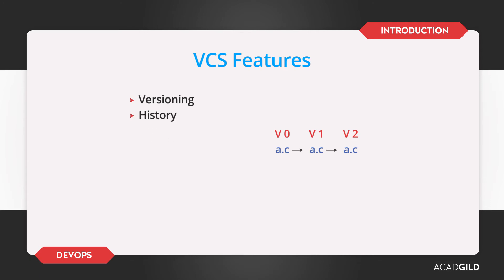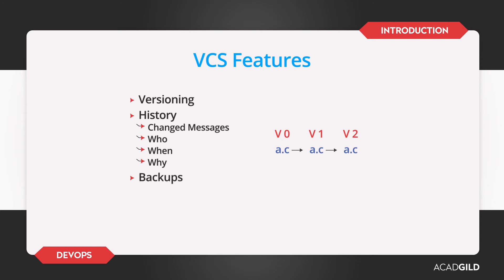Second, History — this feature gives you the record of changed messages: who made the changes, when did they make the changes, why did they make the changes. All this information is available in the version control system, and you can also see the evolution of your project. Third, Backups — version control also provides backups. If you have a central repository maintaining these files with version controls and history, then that means it is a backup place. You can create a backup with help from your operations team, and if there is any outage or disaster and your servers are lost, you can restore from your backup.